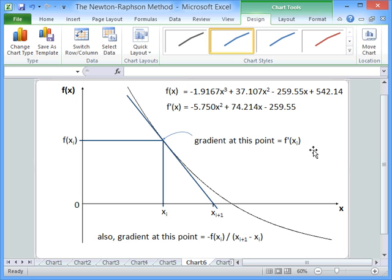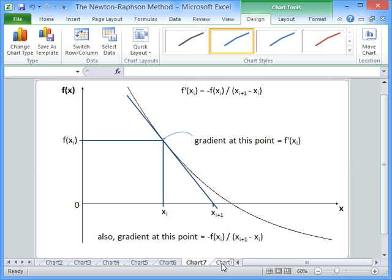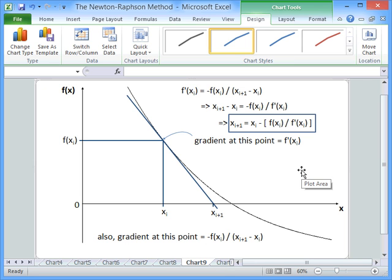So the gradient at this point can be given by differentiating the function. But it can also be given by this numerical construct, this graphical construct here. And if we set these two terms equal to each other, we've got an equation that we can rearrange. And that will give us the Newton-Raphson formula. So to start with, we'll take the xi plus 1 minus xi over to the left-hand side. And we'll take the f dash of xi over to the right-hand side. And finally, we'll add on xi to both sides. And this is the overall Newton-Raphson formula.